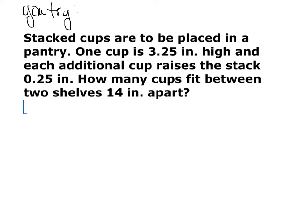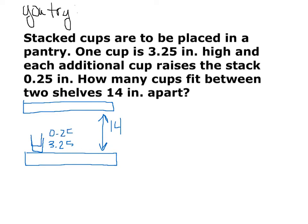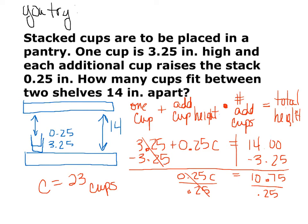I always start with a picture. You can actually start with that. Here I have two shelves, and they are 14 inches apart. If I put one cup in here, that's 3.25 inches tall. If I stack another cup inside of it, I raise it 0.25 inches. How many cups can I put in here? So there's our answer. One cup plus additional cup height times number of additional cups equals total height. 3.25 plus 0.25C equals 14. Solve for C. We first subtract from both sides, and then we divide by both sides, and we're left with an answer.